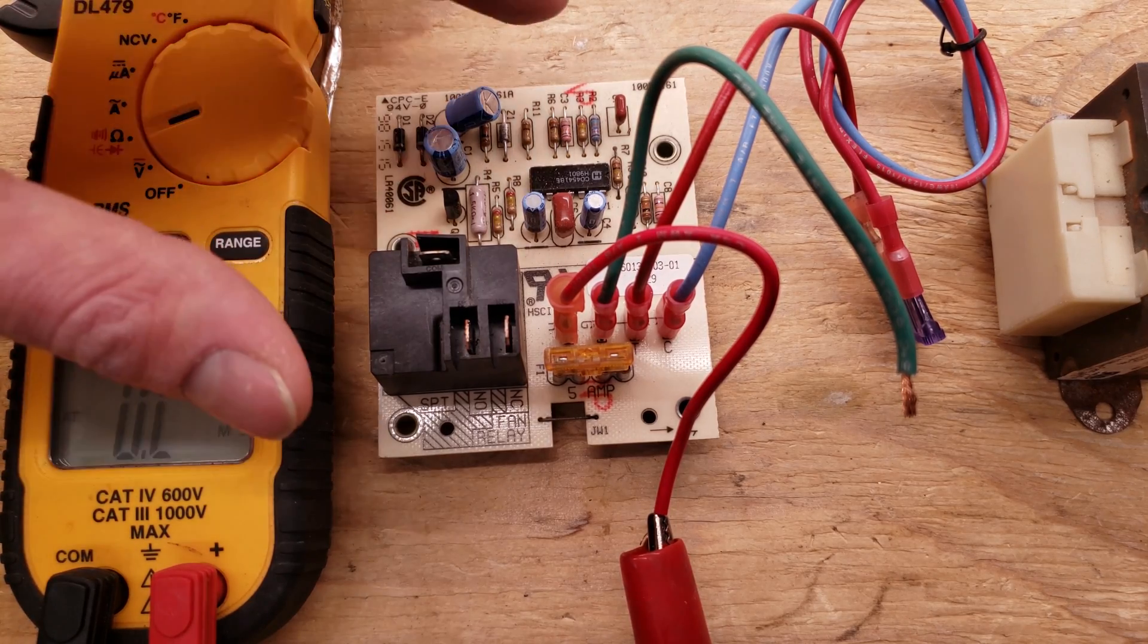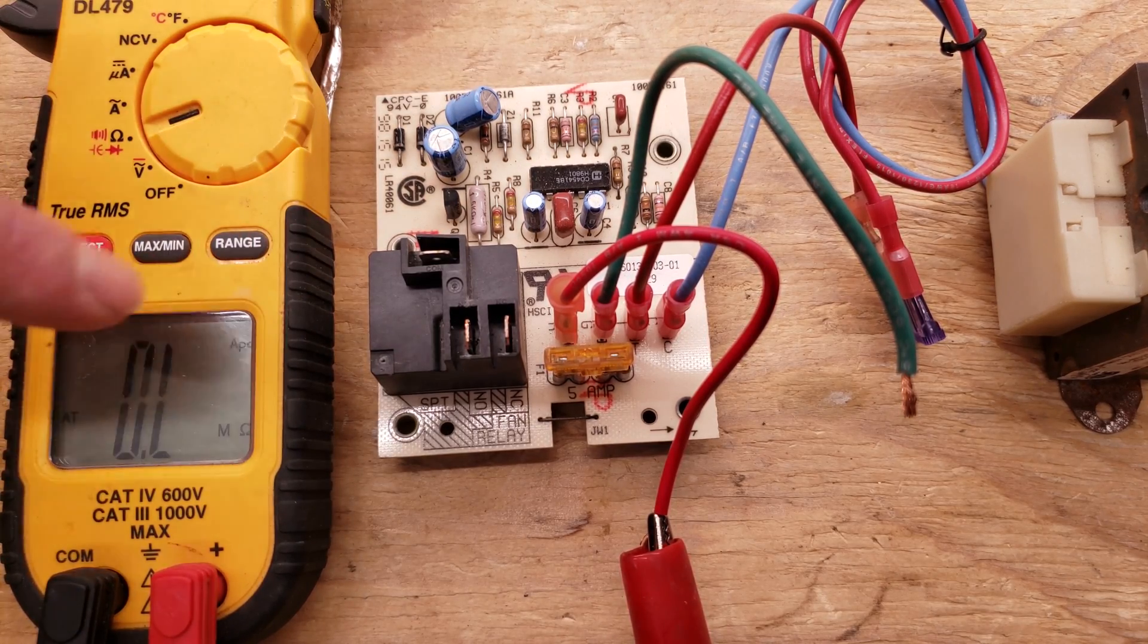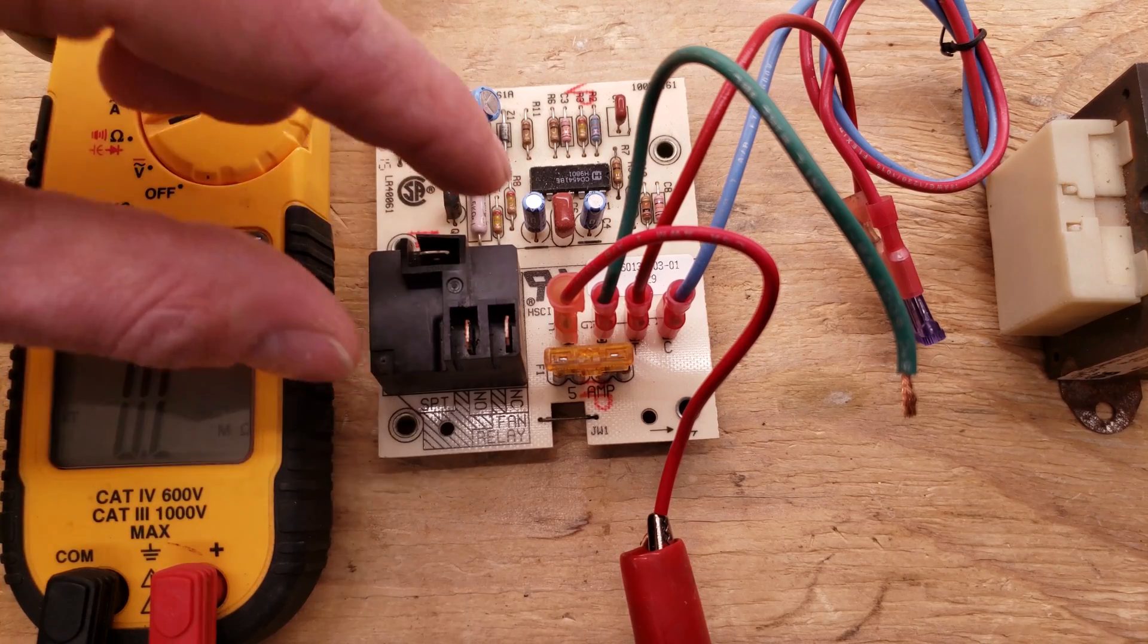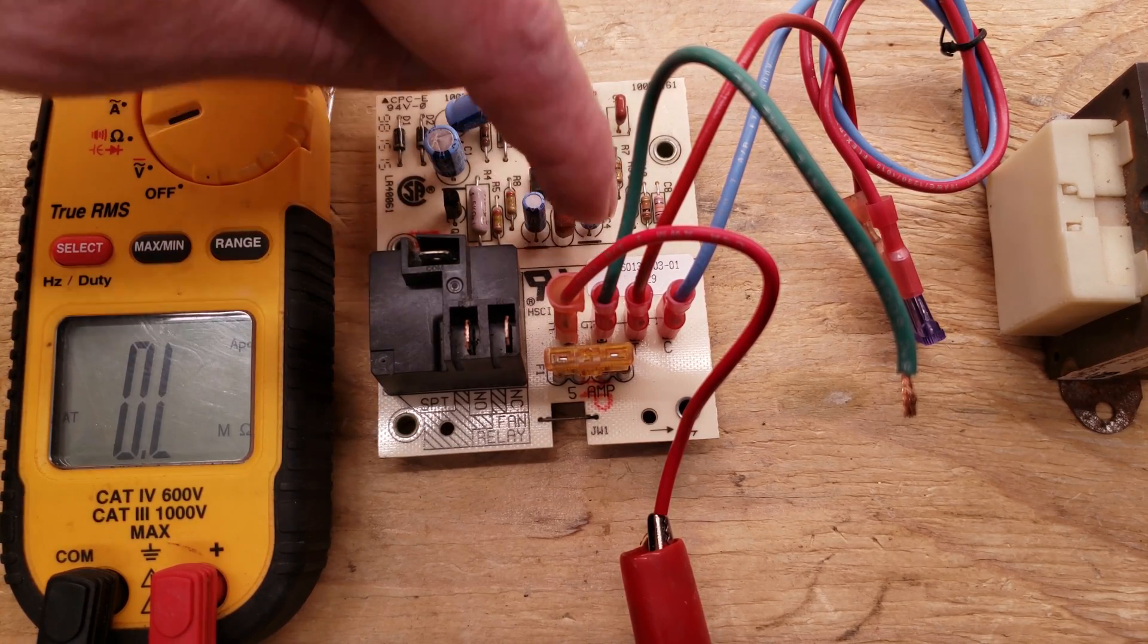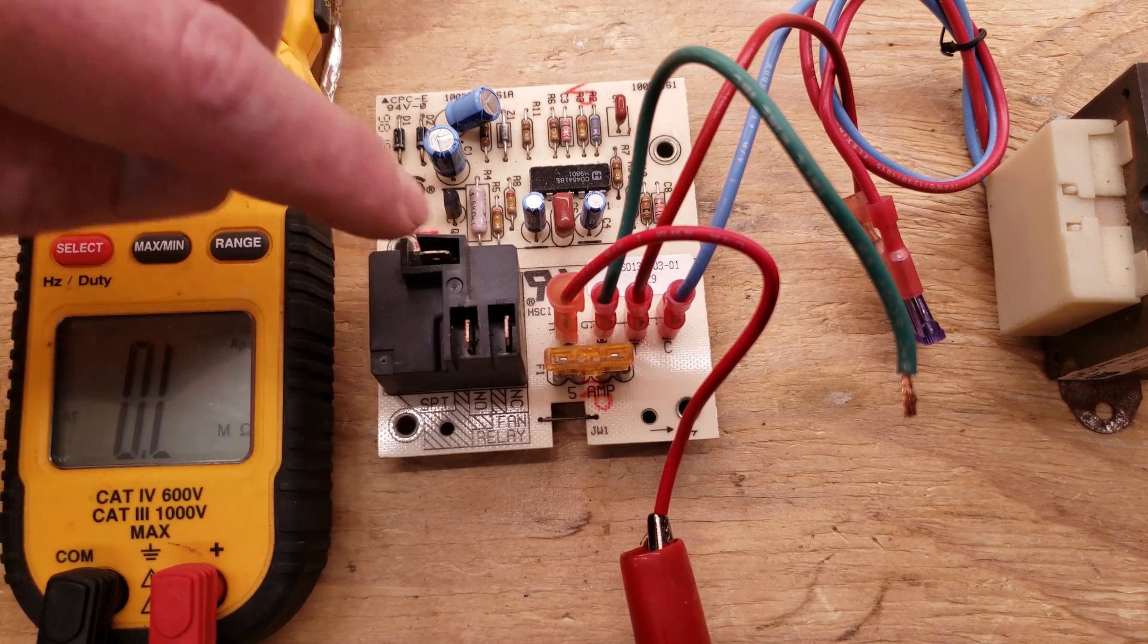So you can do your diagnosis of the control board with resistance on your relay right here, just like we're showing in this video. And then you can put power to the G terminal and then take your power away from the G terminal, checking your resistance values.